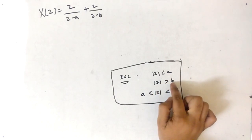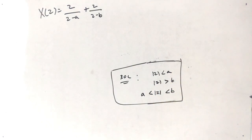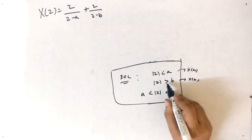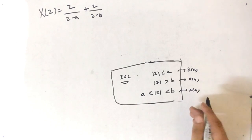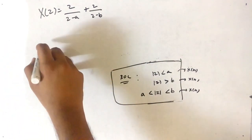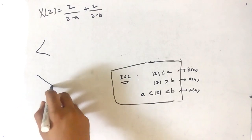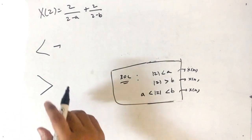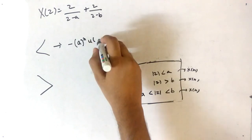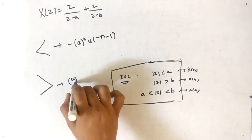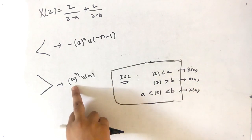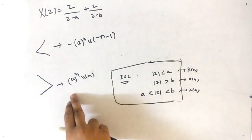The three ROCs are: |z| < a, |z| > b, and a < |z| < b. Each gives a different x(n). The rule for 'less than': the answer is -a^n · u(-n-1). The rule for 'greater than': the answer is a^n · u(n). Here 'a' represents any pole value.